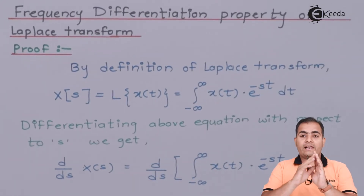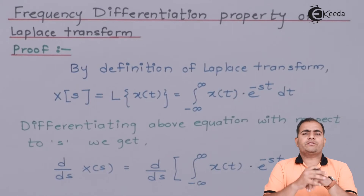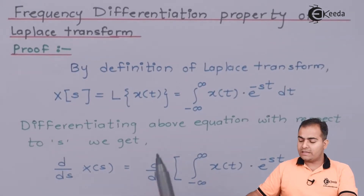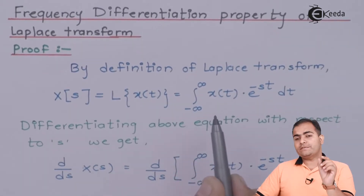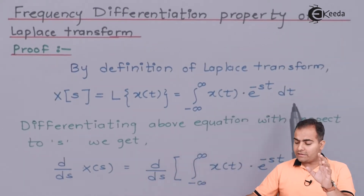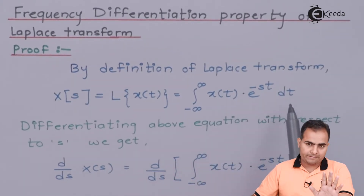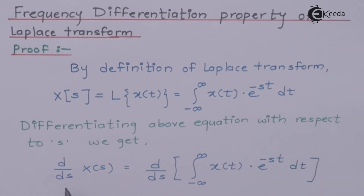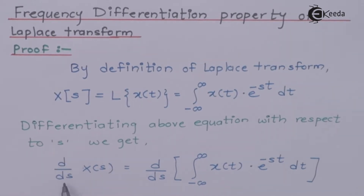X(S) is nothing but the Laplace transform of any continuous time signal — any time signal can be expressed as the integration of that input signal X(T) multiplied with e to the power minus ST, integrated with respect to time T. Now I am going to differentiate both sides with respect to S, so D by DS of X(S) equals D by DS of the definition of the Laplace transform.